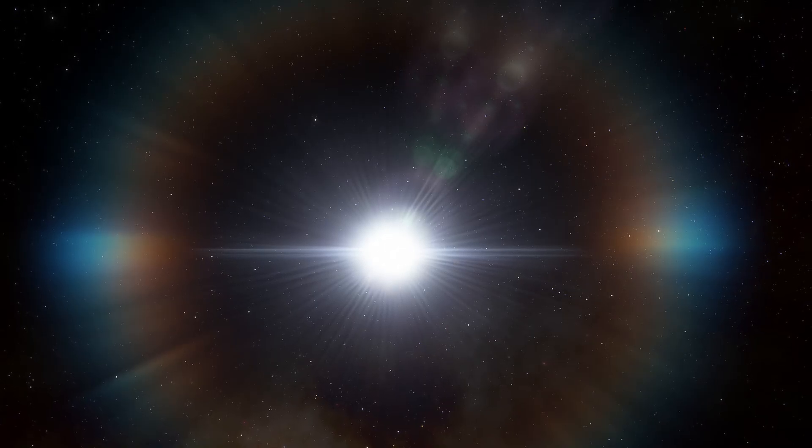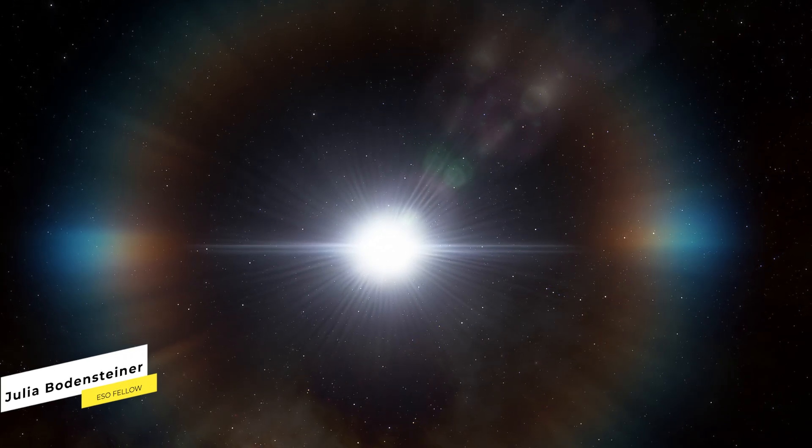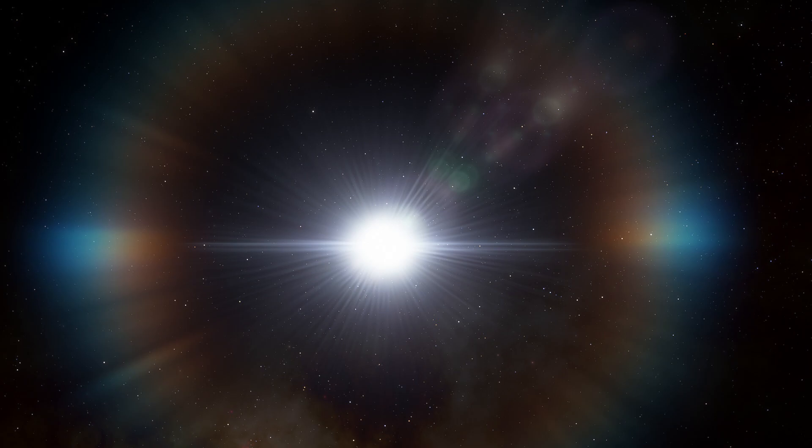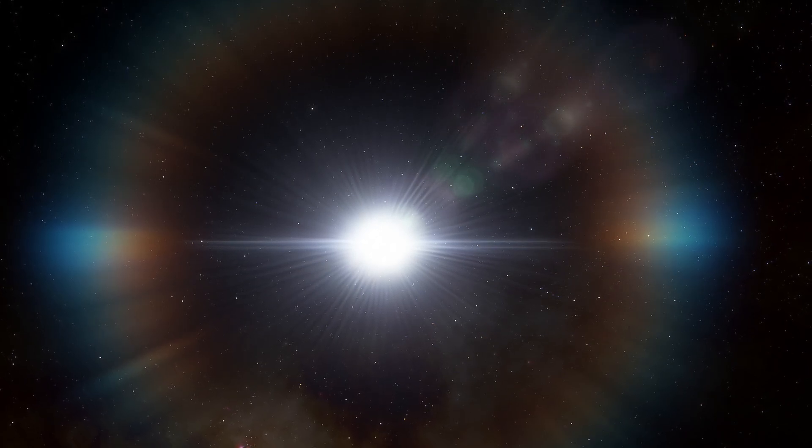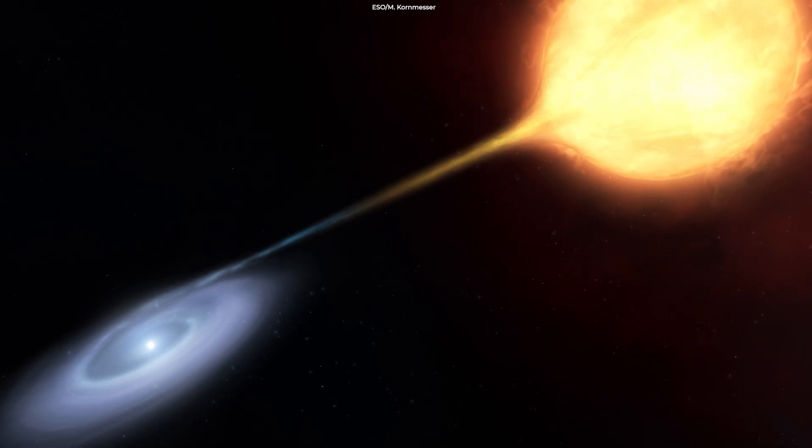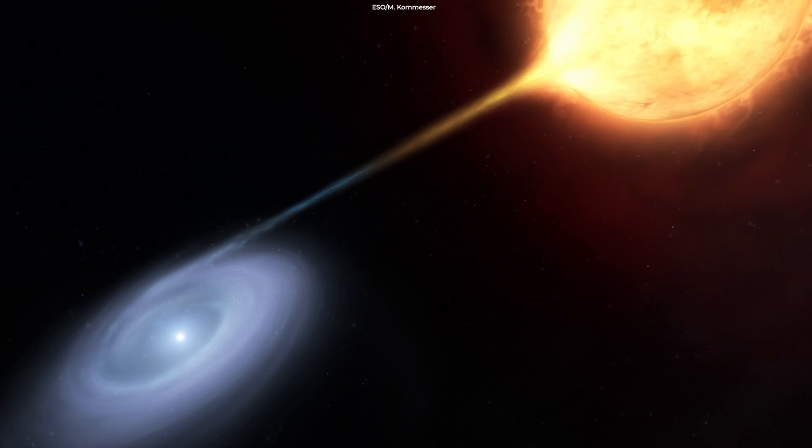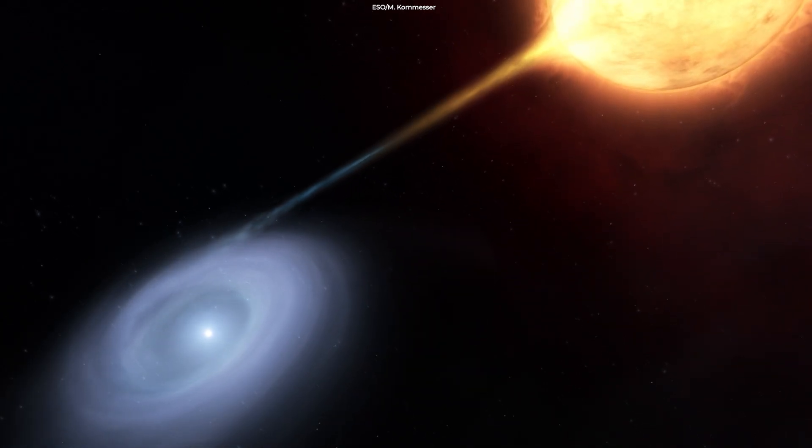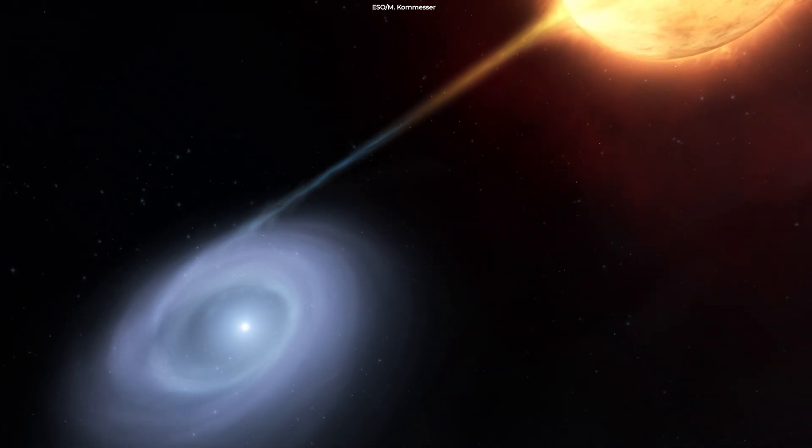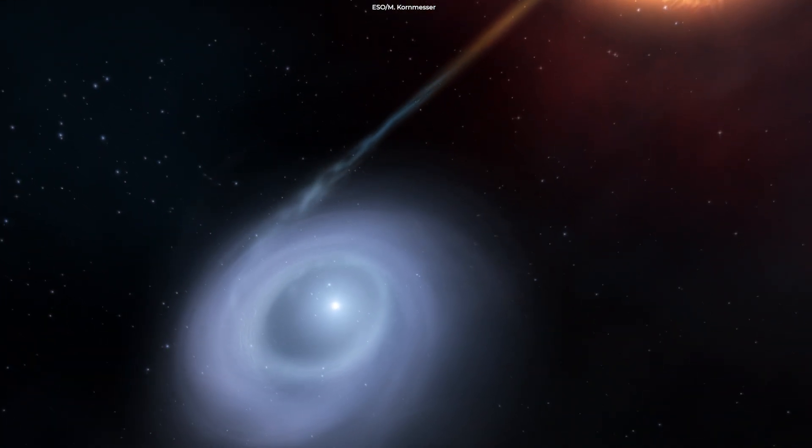However, a 2020 study by Julia Bodensteiner, then a PhD candidate at KU Leuven and now an ESO fellow, posited a different explanation for the same data. She proposed that HR 6819 might potentially be made up of only two stars in a 40-day orbit, with no black hole at all. This would require one of the stars stripping away and absorbing a large portion of the mass of the other star.